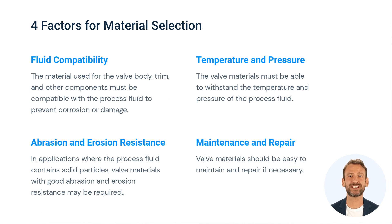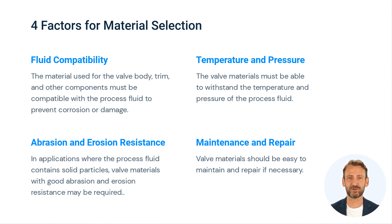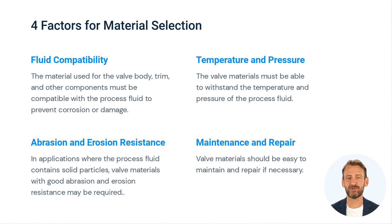Material selection is an important consideration when selecting a control valve. The materials used to construct the valve and its components must be compatible with the process fluid and able to withstand operating conditions. Factors to consider include fluid compatibility — the material used for the valve body, trim, and other components must be compatible with the process fluid to prevent corrosion or damage — as well as temperature and pressure resistance.